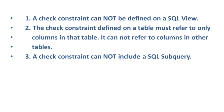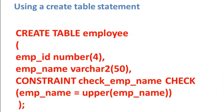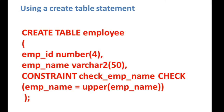Today we are going to see how many ways we can define a check constraint. This is the first method of creating a check constraint using a CREATE TABLE statement. We have created a table known as employee containing empid number(4) and emp_name varchar2(50). The syntax is: CONSTRAINT, then the constraint name — here it is chk_emp_name — then the CHECK clause in brackets with the condition. The condition here is that emp_name must equal UPPER(emp_name), meaning you cannot enter emp_name in lowercase; you must always enter it in uppercase.